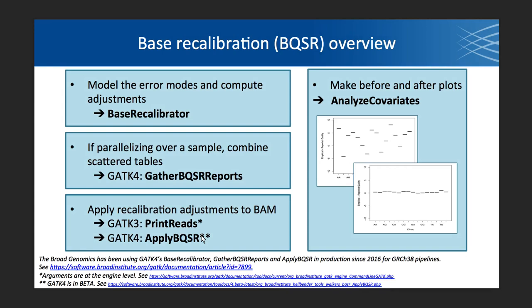This is just an overview of the tools that are involved, highlighting some of the differences in GATK4 compared to GATK3. GATK4 is in beta, but that doesn't mean all the tools within GATK4 are in beta — some are actually ready for use. For example, the tools related to BQSR have been used in our production pipeline since last year, and it's faster than the GATK3 pipeline. BaseRecalibrator is the tool that models the error modes and computes adjustments. In GATK4, we have a new tool called GatherBQSRReports that allows you to gather scattered tables if you've parallelized base recalibration over genomic intervals into a single file — it's only available in GATK4.